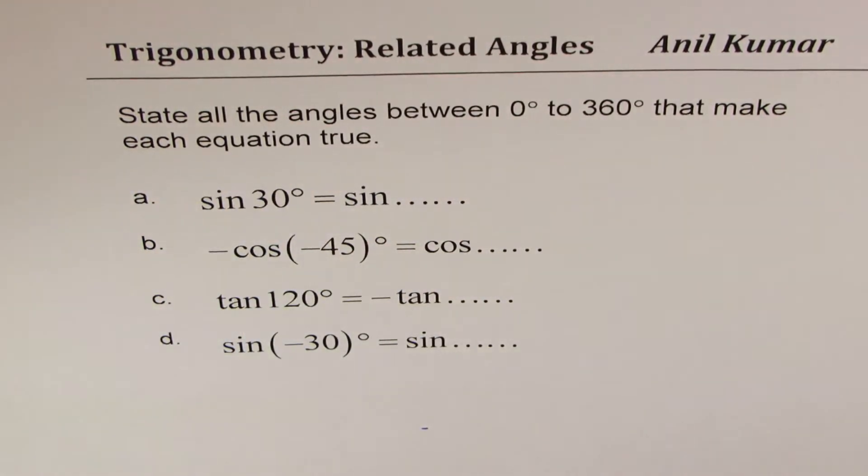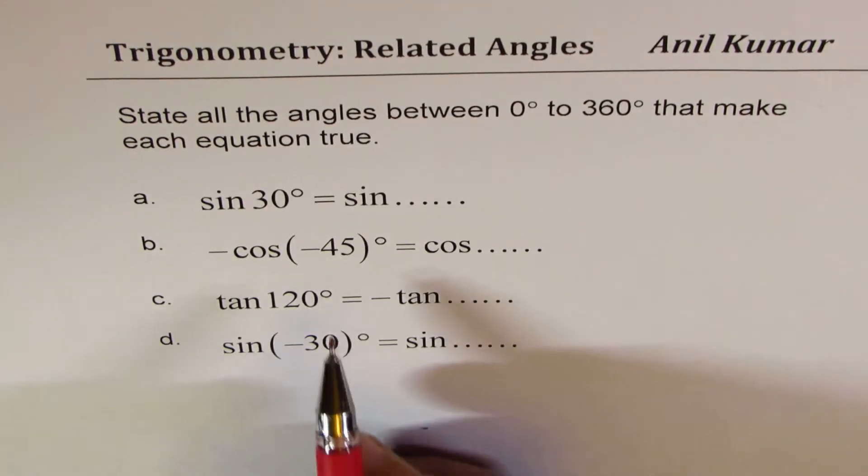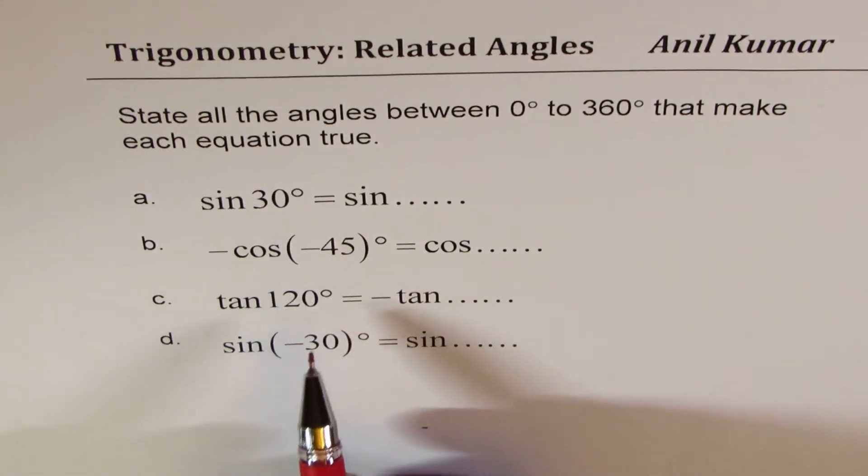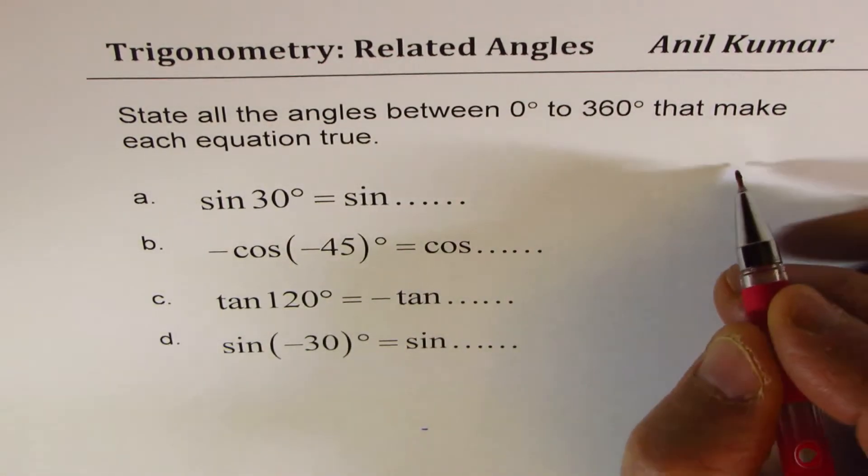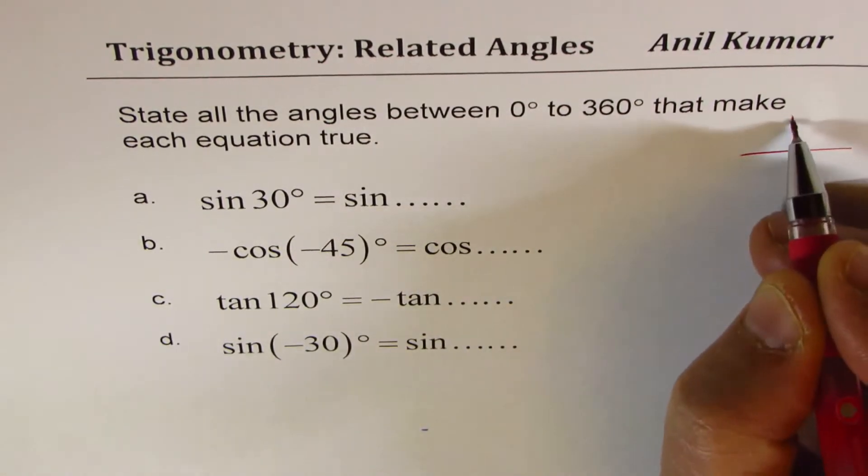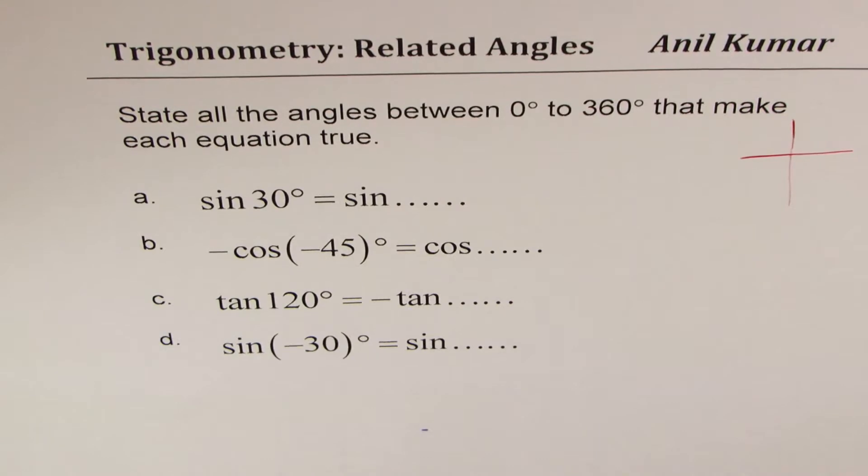So we will work with four examples. Now to get the right answers for all these, what do we have to look into? The important thing to consider is the rule: in which quadrant is which trigonometric ratio positive.